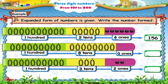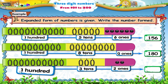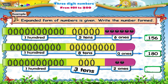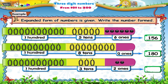Zero tens and zero ones forms the number one hundred and eighty. The next number is one hundred, three tens and two ones. So the number formed is one hundred and thirty-two.